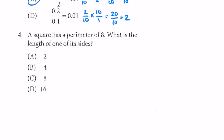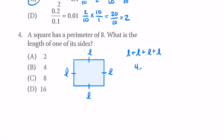Question 4: a square has a perimeter of 8. What is the length of one of its sides? Let's draw a little square. All the sides are equal to each other, so we'll use L for length. All four sides added up must equal 8, because that's what perimeter is. So L + L + L + L, or 4L, equals 8. Divide both sides by 4 and we get L = 2. The length of one side is 2.